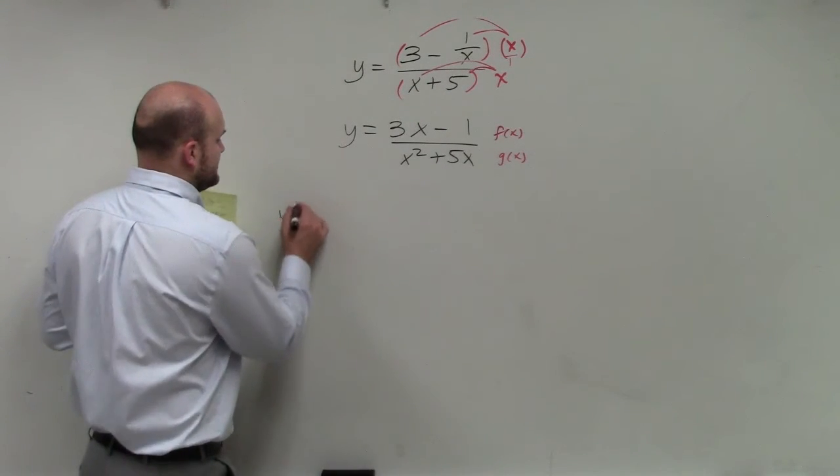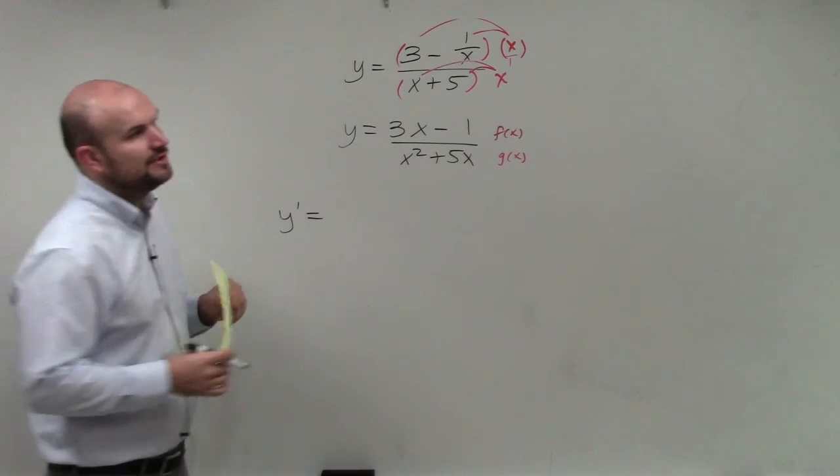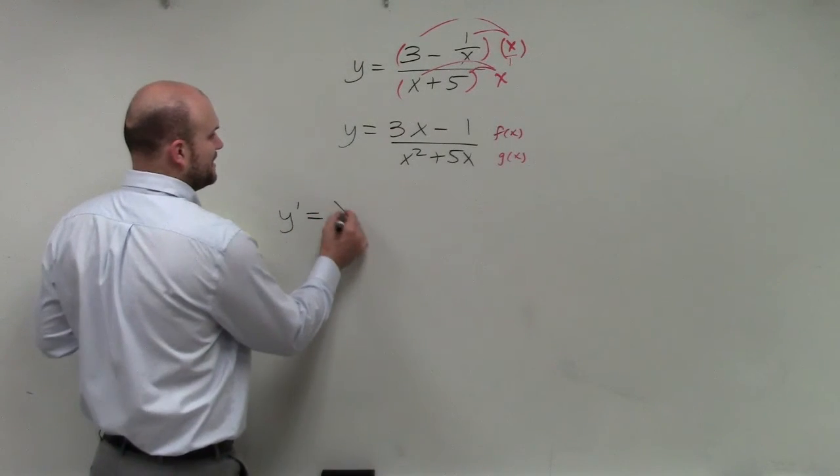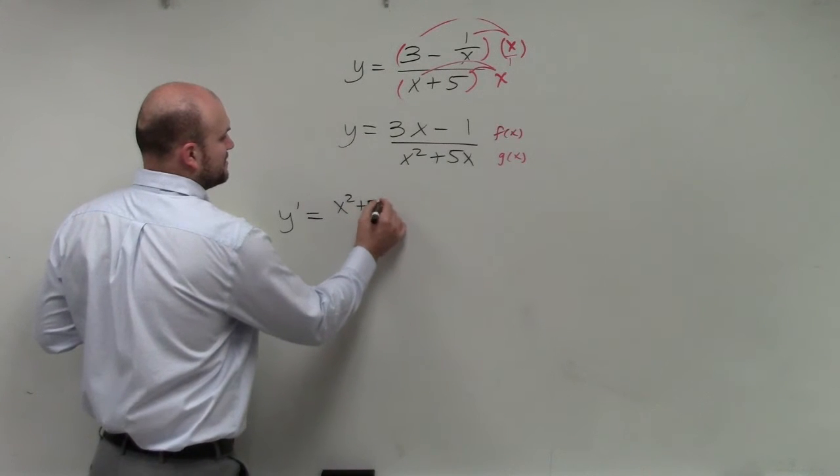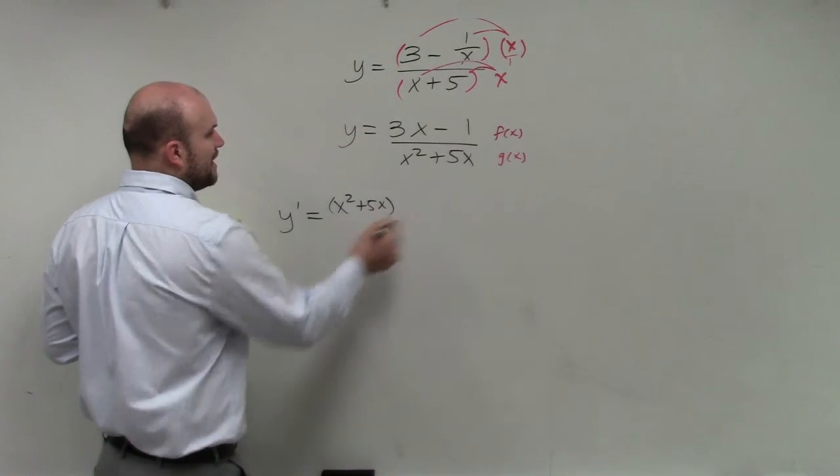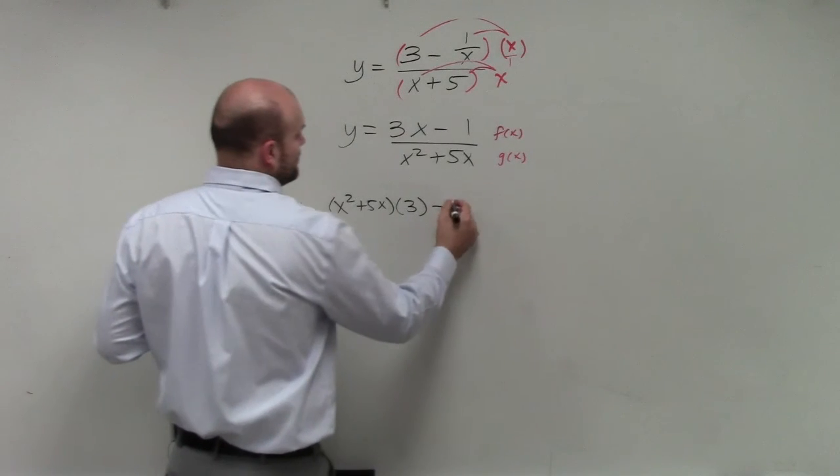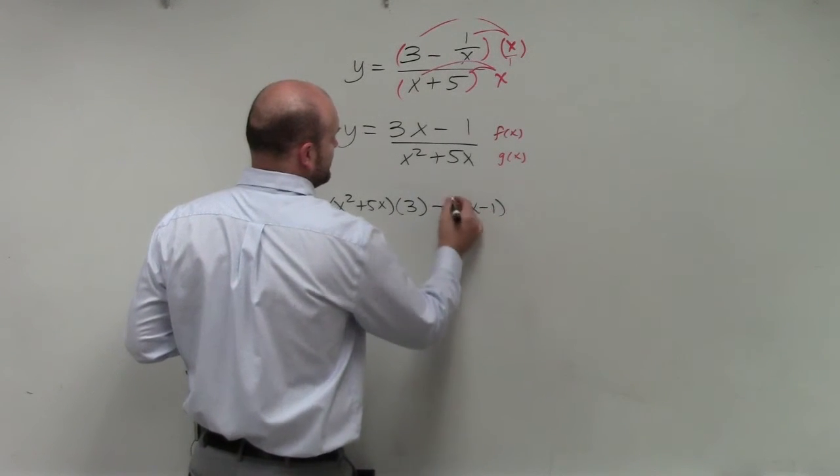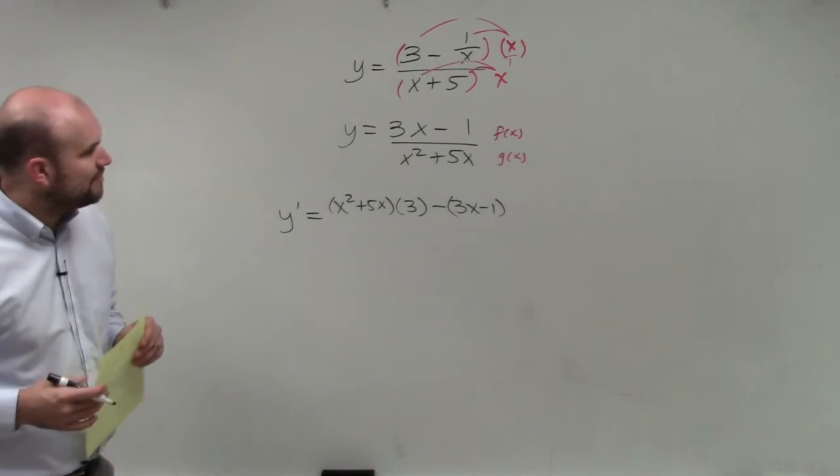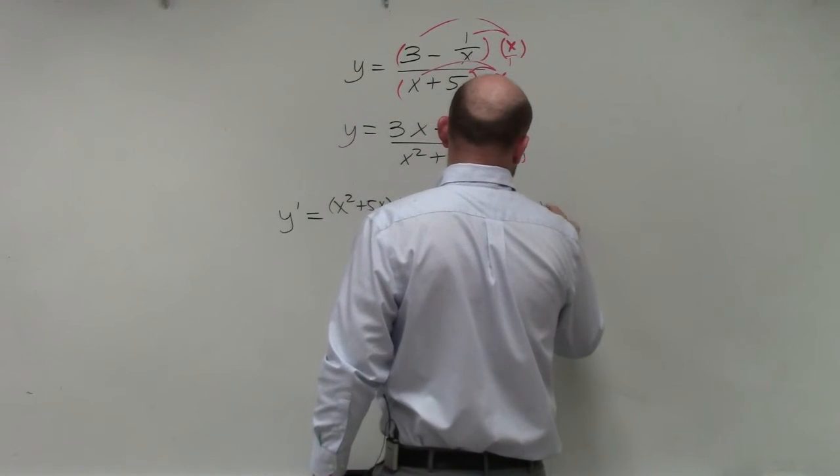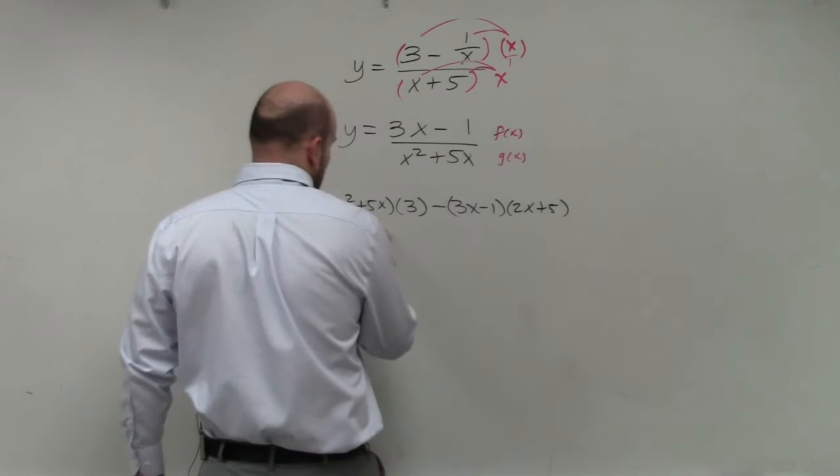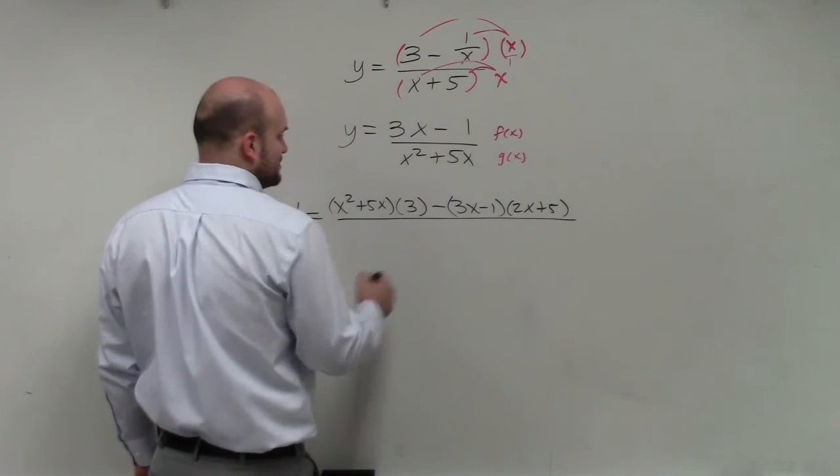So we could say y prime. And then using the quotient rule, we need to take g of x, which is going to be our x squared plus 5x, times our f prime, which is just going to be times 3, minus f of x, which is 3x minus 1, times our g prime of x, which is going to be 2x plus 5. And then that's all over g of x squared.